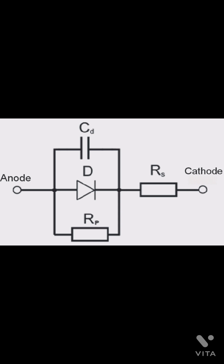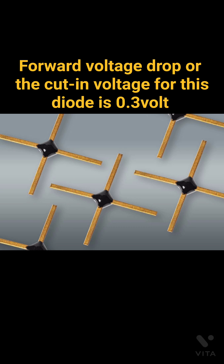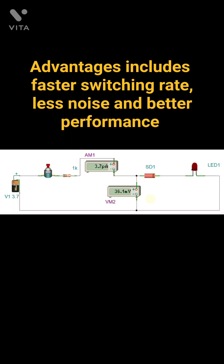The forward voltage, or the cut-in voltage, for the Schottky diode is 0.3V. Advantages include faster switching rate, less noise, and better performance.